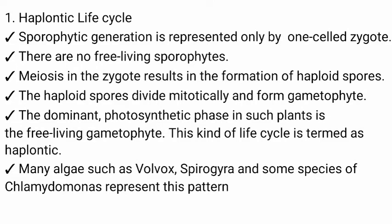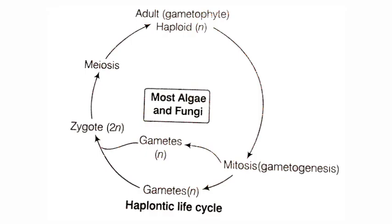The first one is the haplontic life cycle. The sporophytic generation is represented only by the single-celled zygote; there is no free-living sporophyte. Meiosis in the zygote results in the formation of haploid spores. The haploid spores divide mitotically and form the gametophyte. The dominant photosynthetic phase in such plants is the free-living gametophyte. This kind of life cycle is termed haplontic. Many algae such as Volvox, Spirogyra, and some species of Chlamydomonas show the haplontic life cycle.